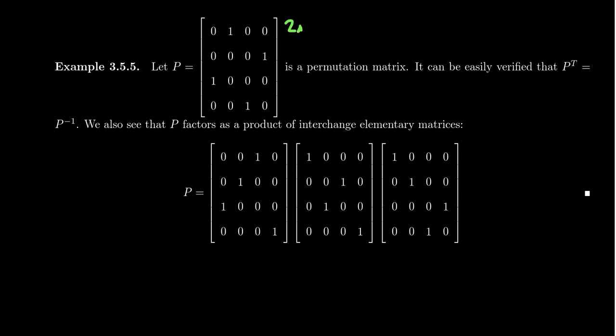Notice that the first row [0, 1, 0, 0] was originally the second row of the identity matrix. The second row [0, 0, 0, 1] was originally the fourth row of the identity. The third row [1, 0, 0, 0] was originally the first row of the identity. And the fourth row [0, 0, 1, 0] was originally the third row of the identity.